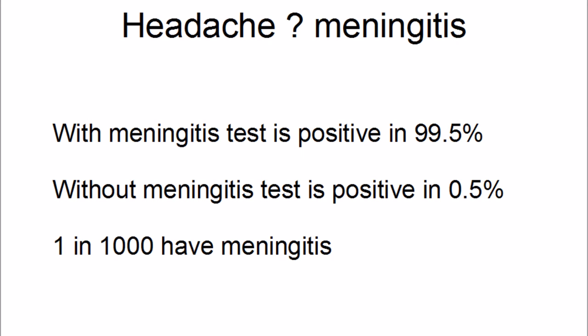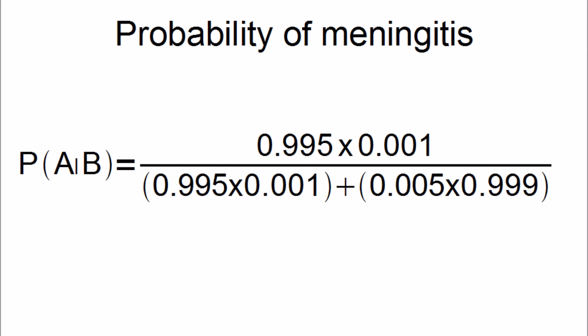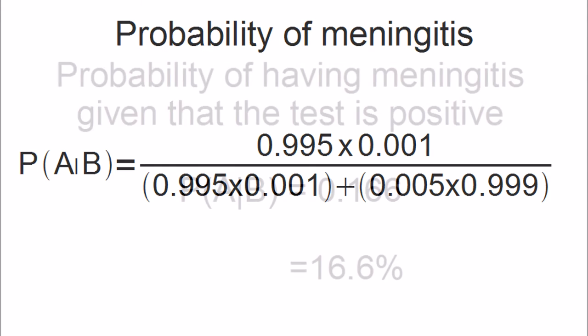Here's a more realistic example. We have a test to see if someone with a headache has meningitis. This test will be positive in 99.5% of people with meningitis, and it will be positive in 0.5% of people who do not have meningitis. We also know that one in a thousand people with a headache have meningitis. If somebody tests positive, what is the probability that they have meningitis? The probability of having meningitis given that the test is positive equals the probability of testing positive given meningitis, times the probability of having meningitis, all over the probability of testing positive. The probability of testing positive equals the probability of having meningitis and testing positive, plus the probability of not having meningitis and testing positive. This is what it comes out at — surprising, perhaps.